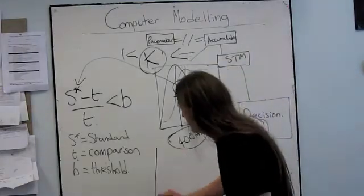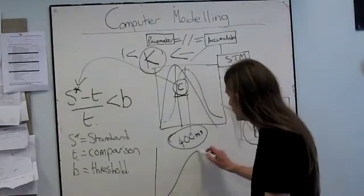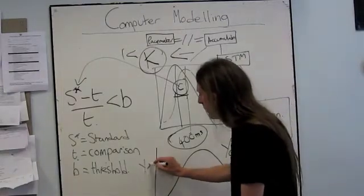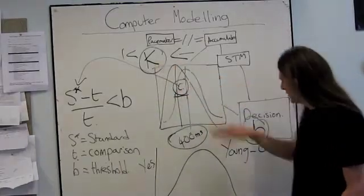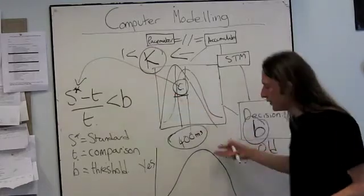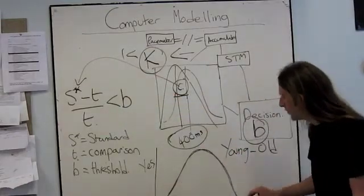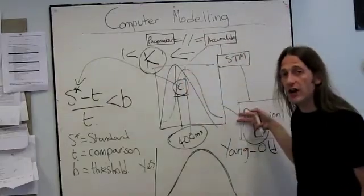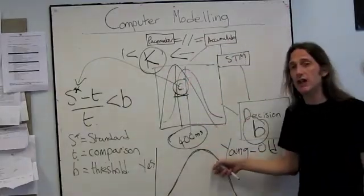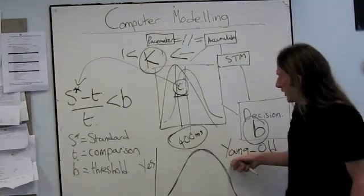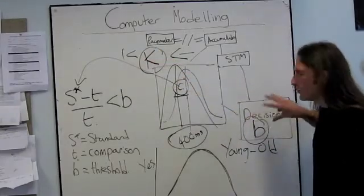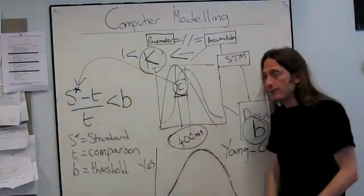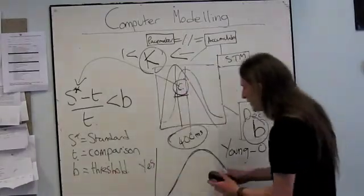What will happen is that eventually — so if this is our data from the young old people, for example — we run the computer using lots of different values, lots of different combinations of values, until the data from the computer matches the data that we got from the young old people. Basically the computer, using this system and a certain set of values, has produced exactly the same data as our subjects. We then have a set of values that the computer had to use in order to fit the data from the young old people. Then we run the whole thing again, but this time we get it to fit the data from the old old people.